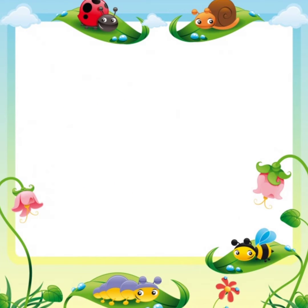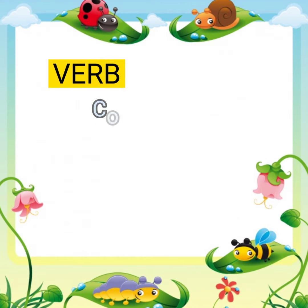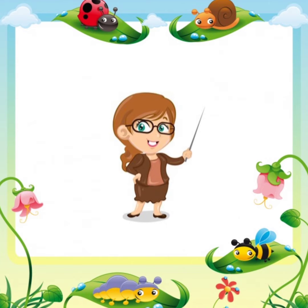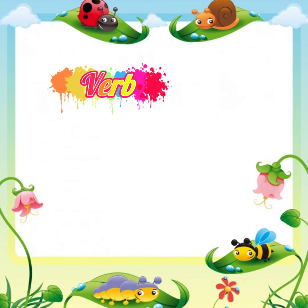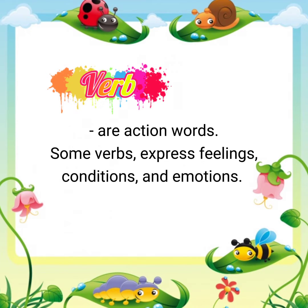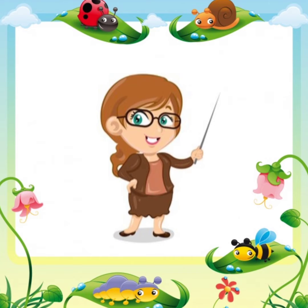Good day everyone. Today we will talk about verbs and the three components which are voice, aspect, and mood. First, we will identify what a verb is. Verbs are action words. Some verbs express feelings, conditions, and emotions. Verbal affixes give the verbs their inflection with respect to voice, mood, and aspect. In Cebuano, almost all words can become verbs by affixation.